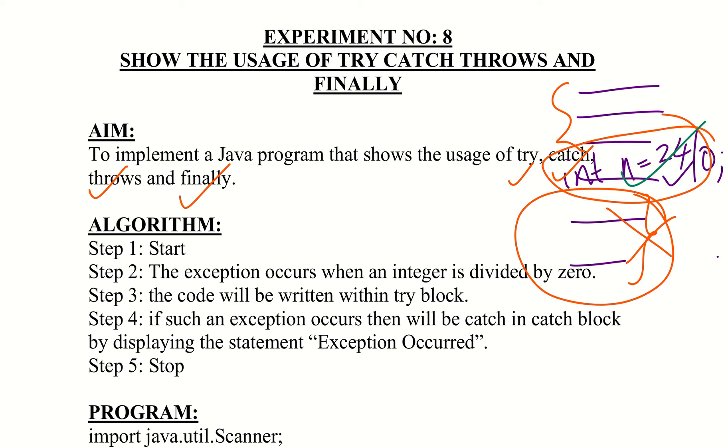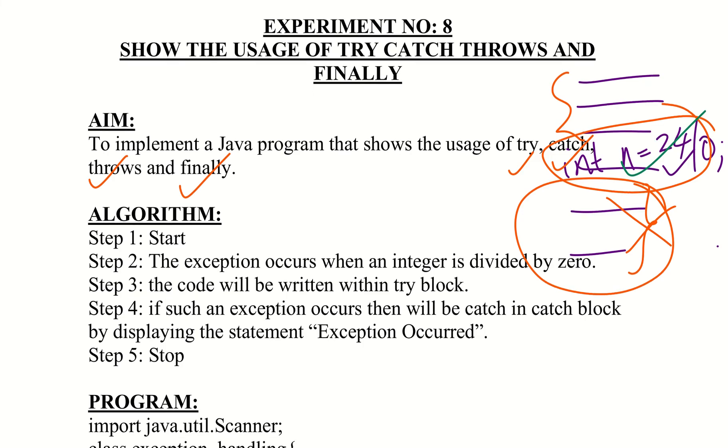The catch keyword is used to handle the exception. The finally keyword is used for code that must always execute, whether or not an exception occurs. The try block contains exception-generating code, and the catch block handles it.